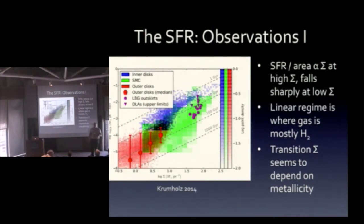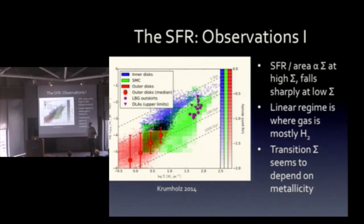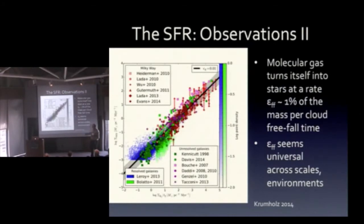This transition is metallicity-dependent. The green data from the Small Magellanic Cloud are significantly offset from the other data, and low-metallicity Lyman-break galaxy outskirts and DLAs similarly show less star formation at fixed gas surface density.